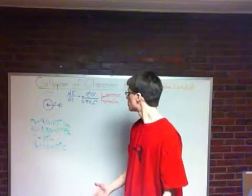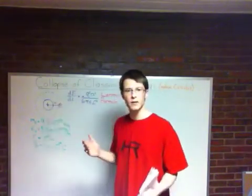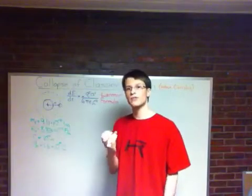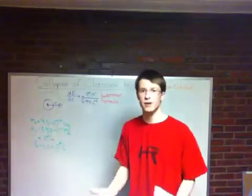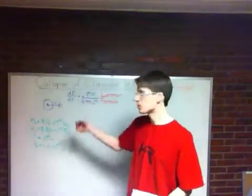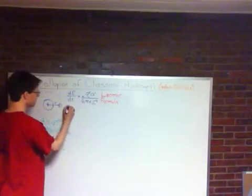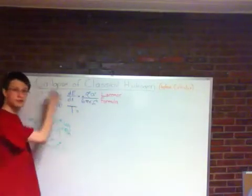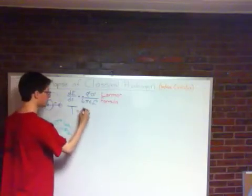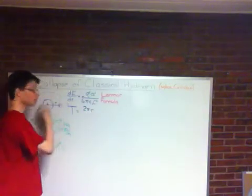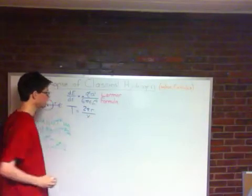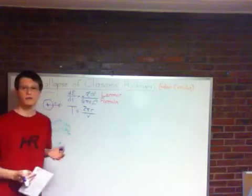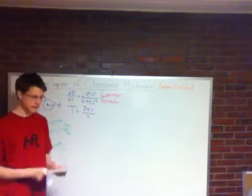So what we want to know to figure out how long it will take is we want to find out first how much energy does it lose each orbit. The Larmor formula doesn't tell us that, so we're going to have to find it on our own. So the period of the electron that it takes to travel one orbit around the nucleus we're going to call t, and it's going to be equal to 2 pi r divided by its velocity v. But we don't have what the velocity of the electron is, so we're going to have to calculate that.